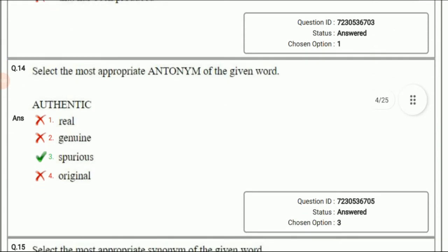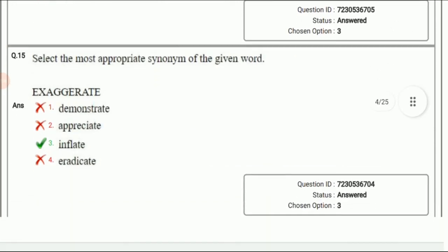Next question: Select the most appropriate antonym of the given word. The word is authentic. Real, genuine, and original are synonyms of authentic. The opposite of authentic is spurious, and the meaning of spurious is false. So obviously it is antonym of authentic. Next question: Select the most appropriate synonym of the given word: exaggerate. The meaning of exaggerate is to make something seem much larger than its reality. The correct answer is inflate. The meaning of inflate is also to blow up something to make it larger or seem larger. The answer is option 3, inflate.